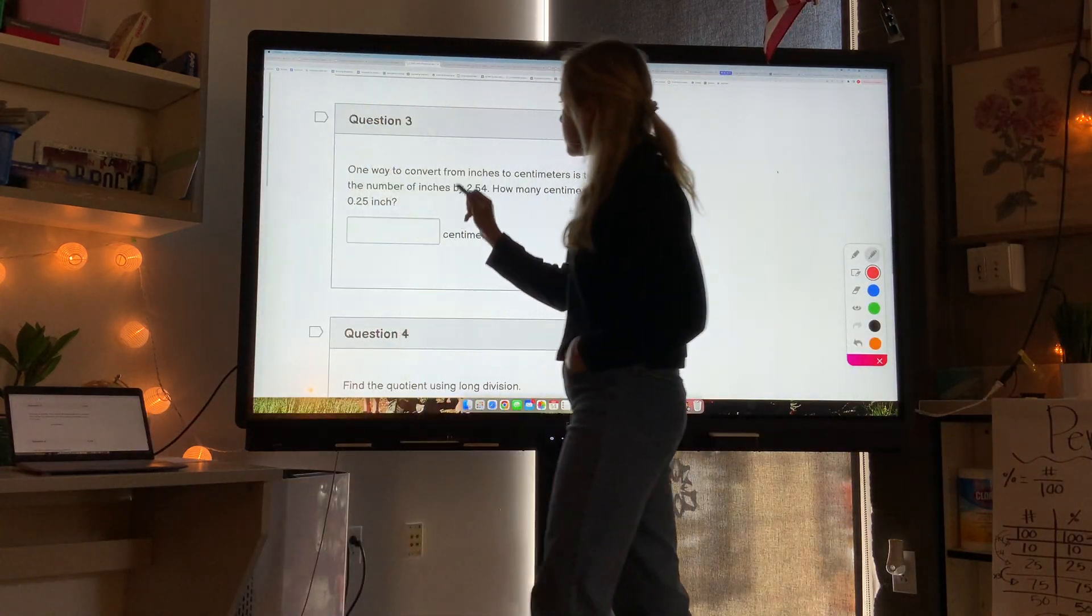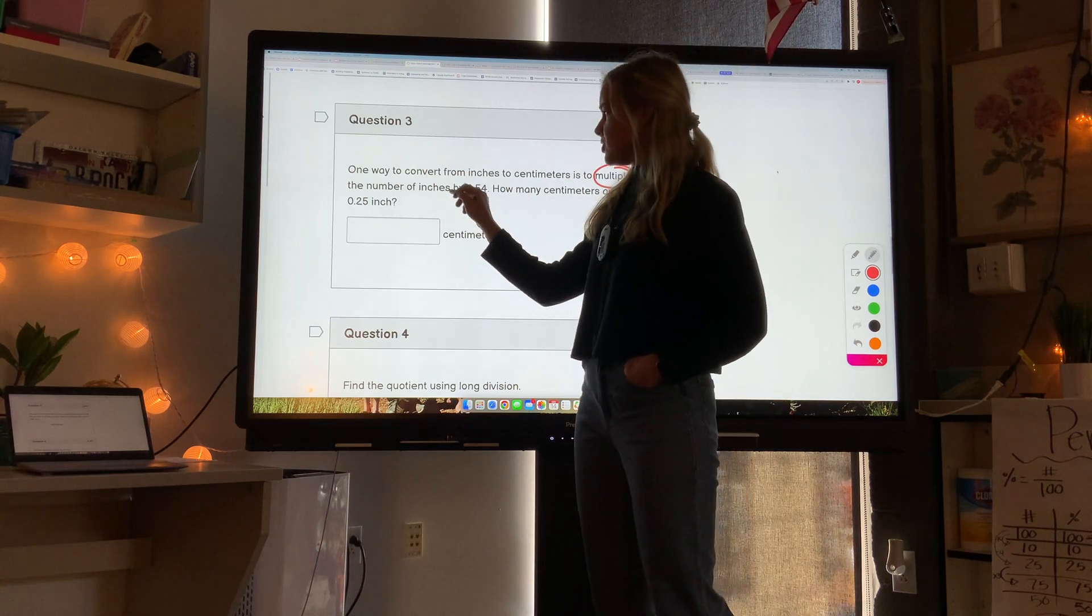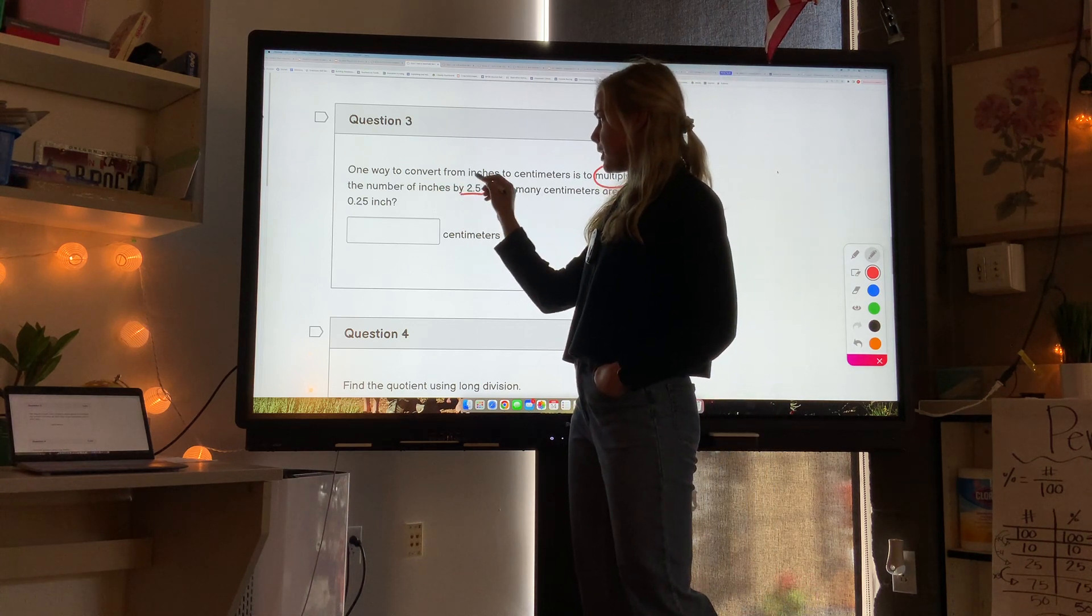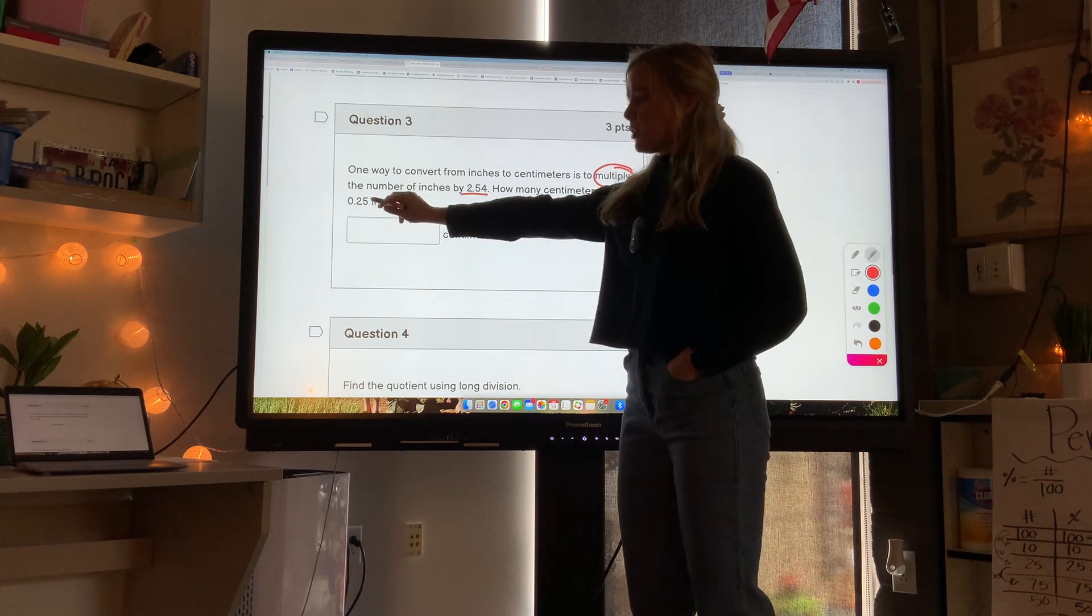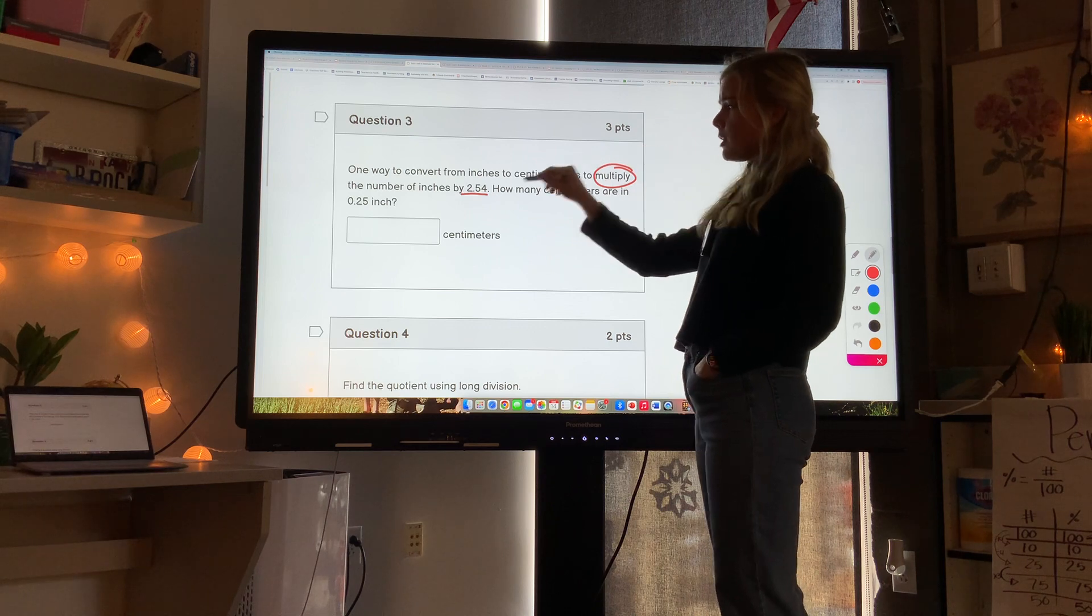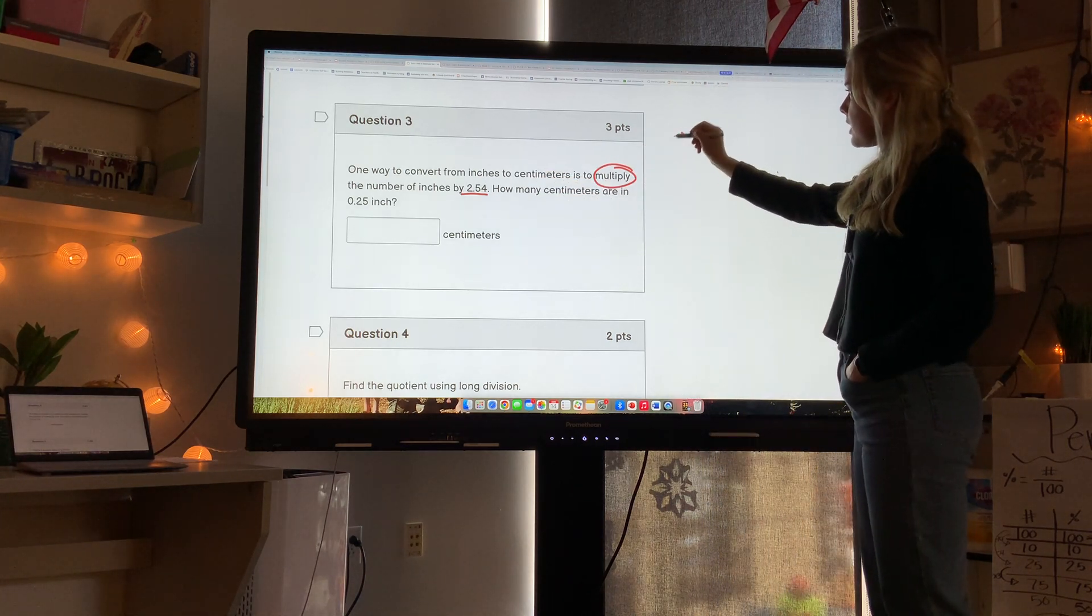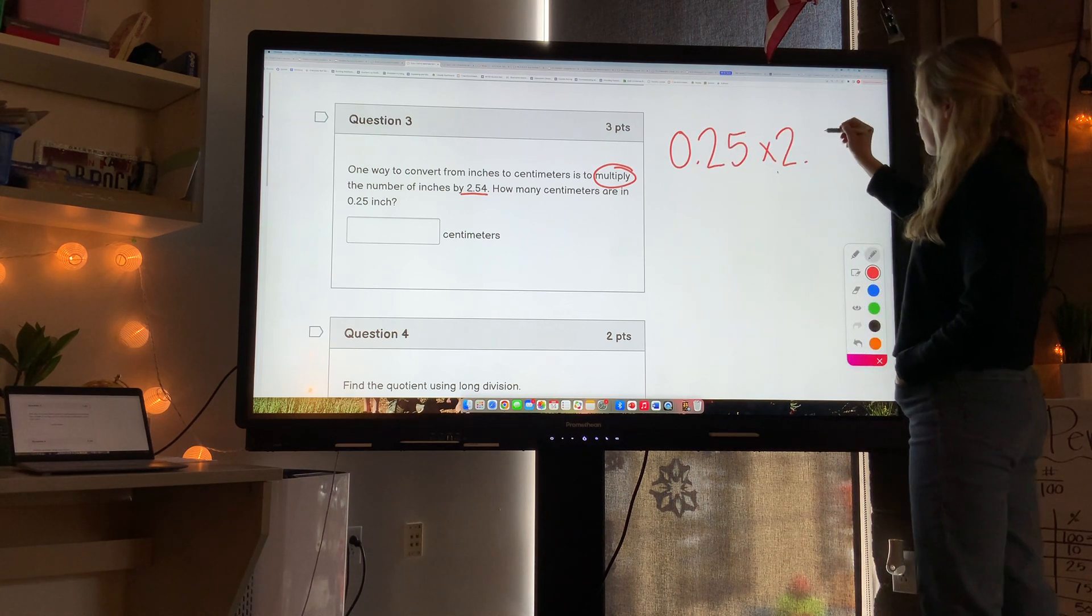Question 3. One way to convert from inches to centimeters is to multiply the number of inches by 2.54. So how many centimeters are in 0.25 inches? It literally tells us, so we take the inches and multiply it by 2.54. So I'm going to take 0.25 and multiply that by 2.54.